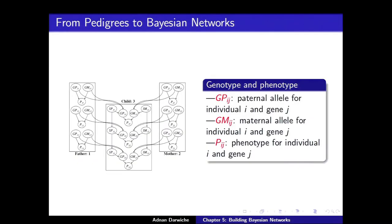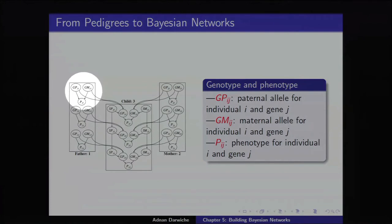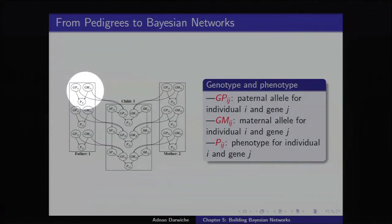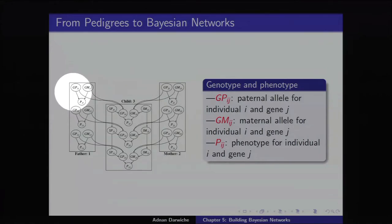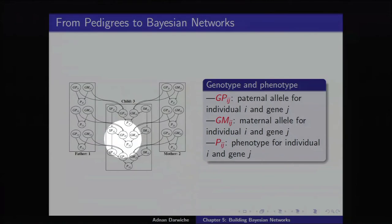Let's understand the variables. For each individual and each gene, there are three variables: the paternal allele (Gp) and maternal allele (Gm) — one received from the father and one from the mother — and the phenotype (P). For blood type, P would be the blood type and the parents would be the two allele values. The CPT for P will be either 0/1 for a deterministic phenotype or probabilistic if there's penetrance. This structure recurs for each gene and each individual.